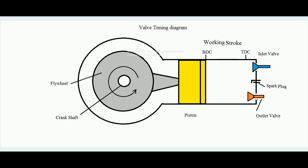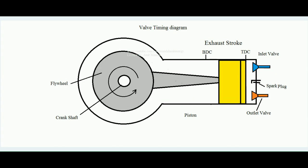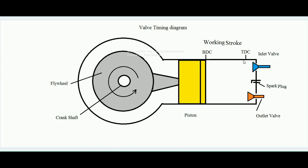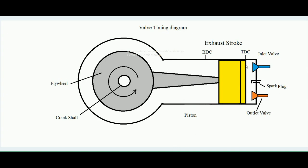The outlet valve ideally must open exactly at the end of the working stroke — which is also the beginning of the exhaust stroke. It must remain open until the exhaust stroke ends. So ideally, the outlet valve opens at the end of the working stroke or beginning of exhaust stroke and closes at the end of the exhaust stroke. This completes the ideal valve timing for both inlet and outlet valves.